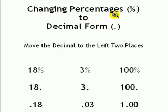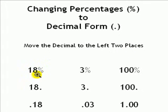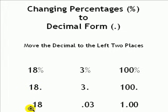To change percentages to decimal form, simply move the decimal to the left two places. With 18%, the decimal is on the right side — move it 1, 2 places to the left, and you have 0.18.